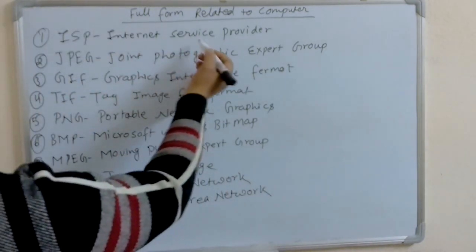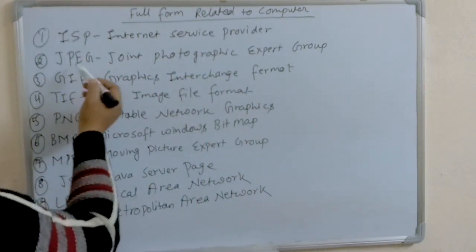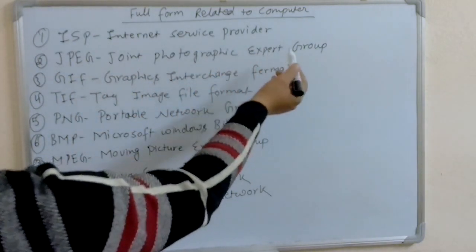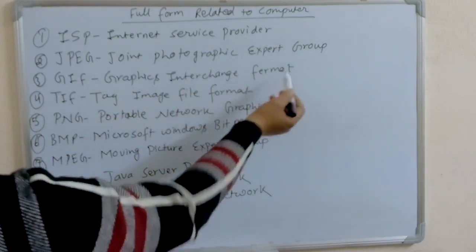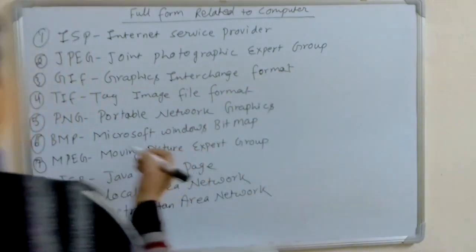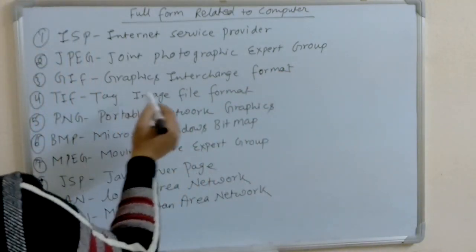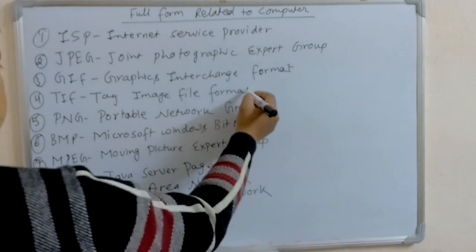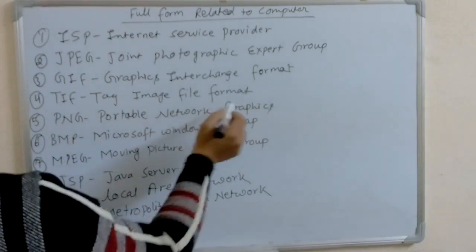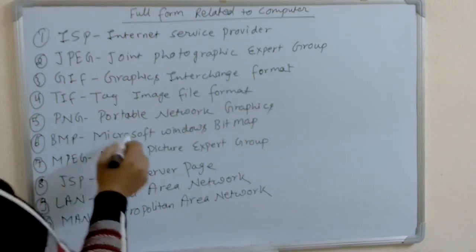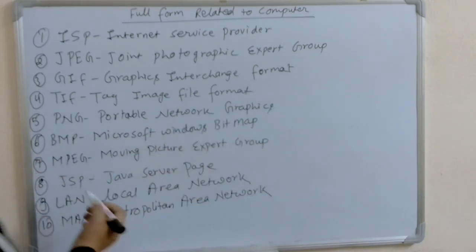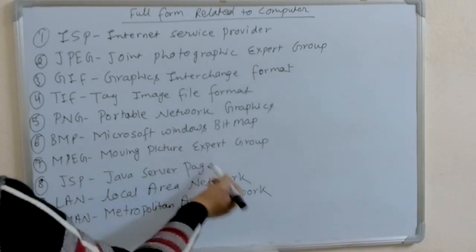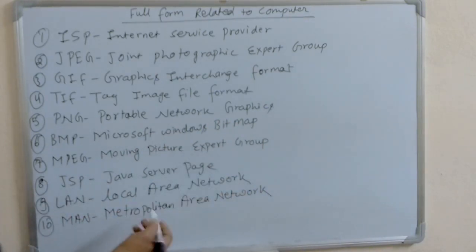Quick recap: ISP — Internet Service Provider. JPEG — Joint Photographic Export Group. GIF — Graphics Interchange Format. TIF — Tag Image File Format. PNG — Portable Network Graphics. BMP — Microsoft Windows Bitmap. MPEG — Moving Picture Export Group. JSP — Java Server Page. LAN — Local Area Network. MAN — Metropolitan Area Network.